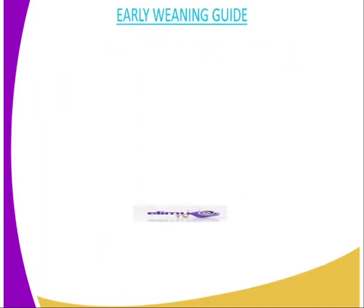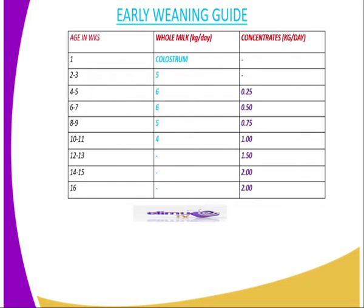Now let's go to the early weaning guide. I have tabulated the weaning guide in the form of a table. On the first column there is age in weeks, the second column is the feed in terms of milk and colostrum, and the third column is concentrate in kg per day. In week one, you are supposed to entirely feed the calf using colostrum only, because colostrum is rich in antibodies which provide immunity to the body.